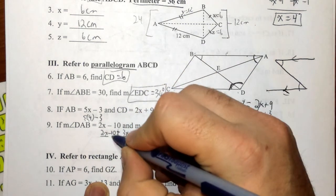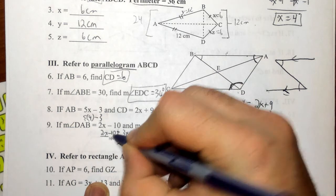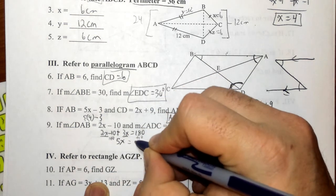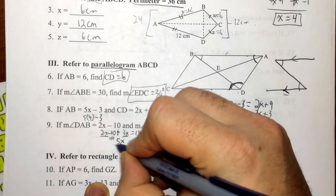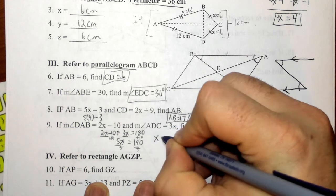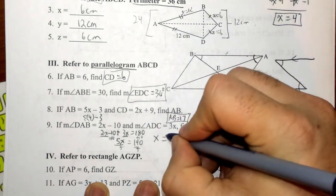And I'm going to transpose the 10 over, so add 10 to both sides. Gives me 5x equals 190. Divide both sides by 5, and x is going to equal 38.